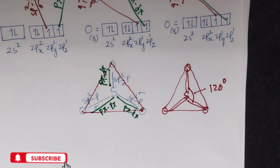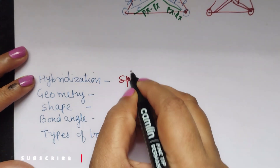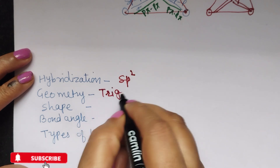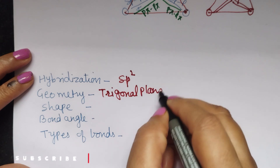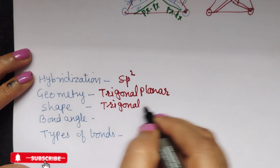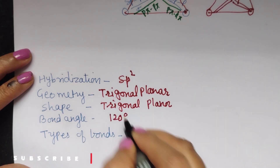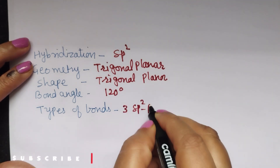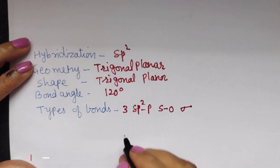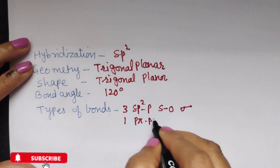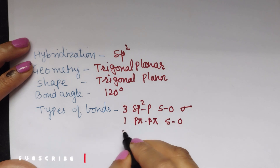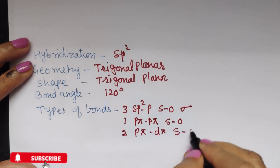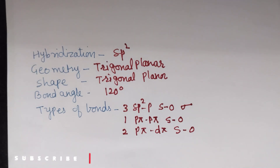To revise: the type of hybridization is sp2 hybridization. The geometry is trigonal planar, and the shape is also trigonal planar because there is no lone pair on sulfur. The bond angle is 120°, which is the regular bond angle of sp2 hybridization. There are three sp2-p sigma bonds between sulfur and oxygen, one p-pi–p-pi bond, and two p-pi–d-pi bonds between sulfur and oxygen. I hope you have understood the concept. Please like this video and share it with your friends. Thank you, students.